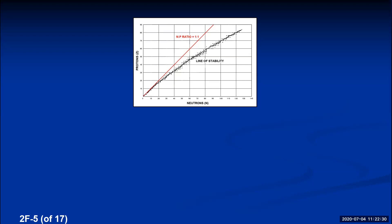For small atoms with fewer than 20 protons, all the stable black dots are very close to that red 1:1 line. For example, oxygen-16 has 8 protons and 8 neutrons — a 1:1 ratio — and is stable. As you increase the number of protons and move up on the graph, the line bends to the right, meaning you need more neutrons to keep the nucleus stable. The line of stability ends around 83 protons — if you have more than 83 protons, you will not be a stable atom.